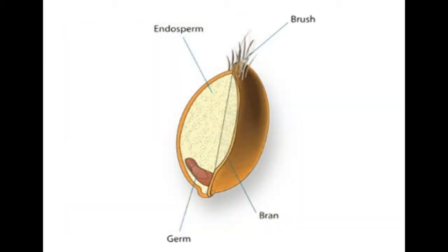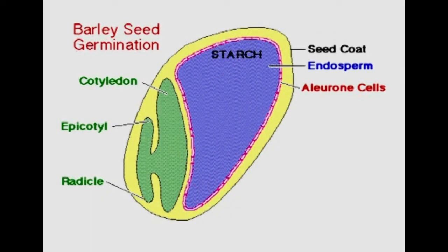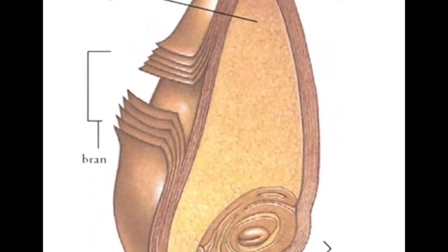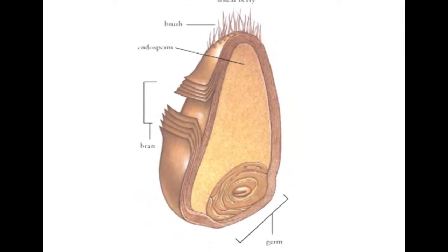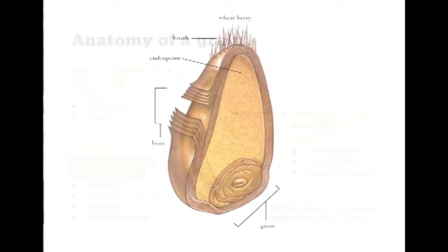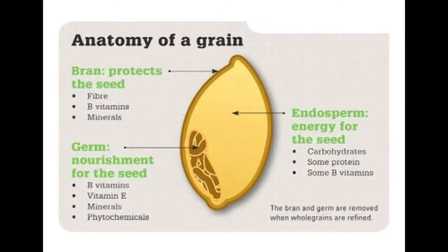Below that is the major component, the endosperm, which comprises mostly of the starch of the cereal grain, some amount of proteins and also some B vitamins. Just at the corner of the endosperm is the germ, which is a very important layer because it gives rise to a new shoot or plant. As a result, the germ contains a lot of amino acids as part of the protein, as well as lipids, B vitamins and certain minerals. This germ is attached to the endosperm with the help of scutellum, which mobilizes all the nutrients during the process of germination.